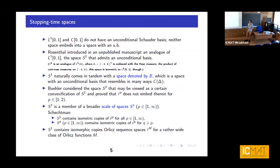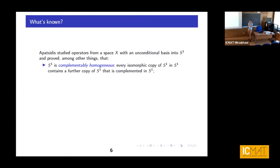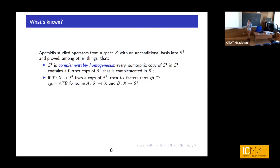So we know more or less what are the possible resemblances with LP spaces. Before I tell you what these spaces are, I'd like to advertise a paper from around six years ago by Apatsidis, who studied operators from a space with an unconditional basis into S1. He proved the analog result that the space is complementedly homogeneous: if you can find a copy of S1 inside S1, you will find a further complemented copy, and also if you have an operator bounded below on a copy of S1 you can factor the identity on S1.